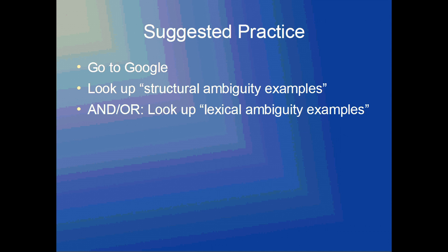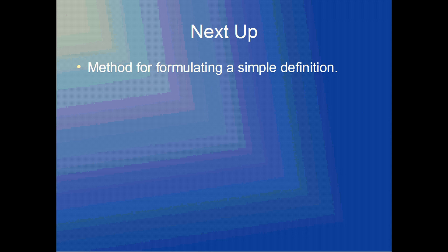If you'd like more practice, you can go to Google. For lexical ambiguity, you can type in 'lexical ambiguity examples' or 'structural ambiguity examples.' For semantic ambiguity, you can type in 'ambiguous words,' 'ambiguous sentences,' or 'semantic ambiguity examples' — though you'll likely get better results with 'ambiguous words' or 'ambiguous sentence examples.' In the next Logic and Reasoning workshop, I will give you a method for formulating a simple definition. Thank you.